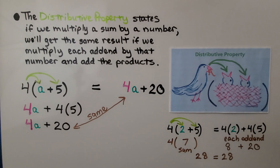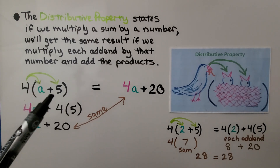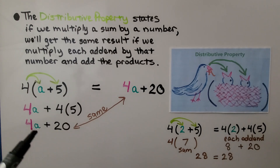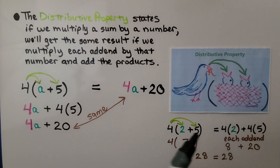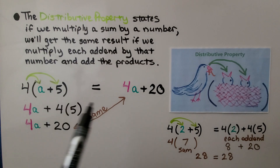The distributive property states that if we multiply a sum by a number, we get the same result if we multiply each addend by that number and add the products. We take turns going to each term: 4 times a plus 4 times 5, giving us 4a plus 20. So if a equals 2, we'd have 4 times 2 plus 4 times 5, or we could just add inside to get 4 times 7, which equals 28. These expressions are equivalent because of the distributive property.